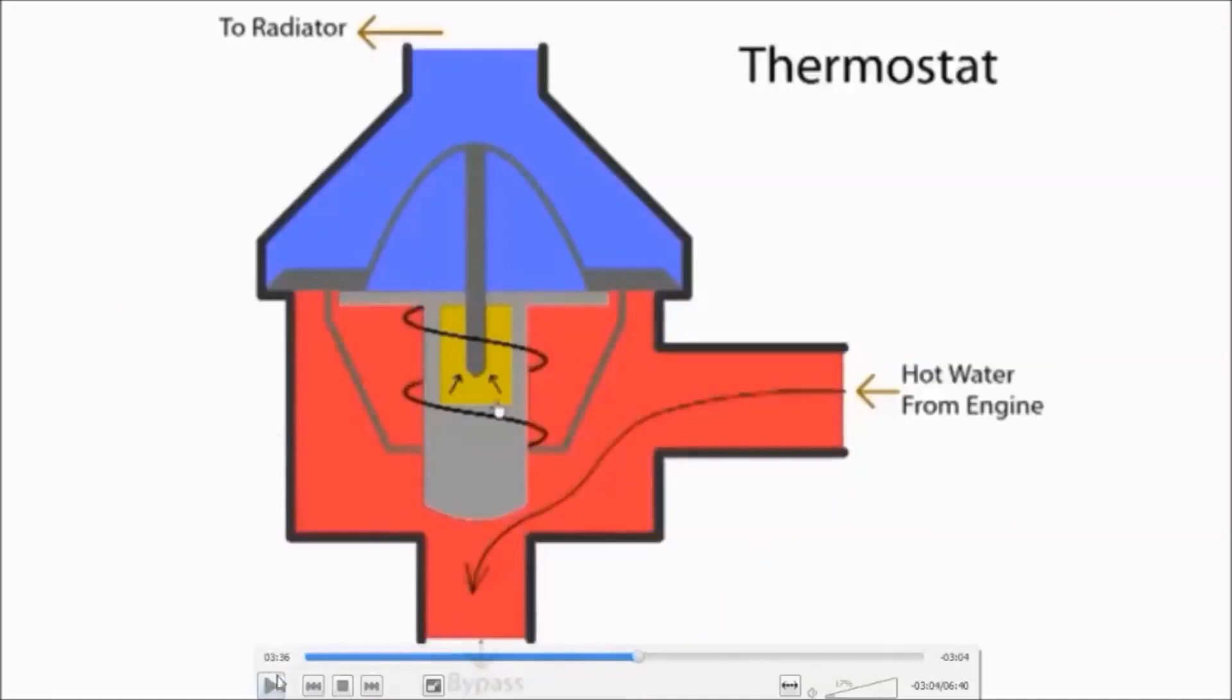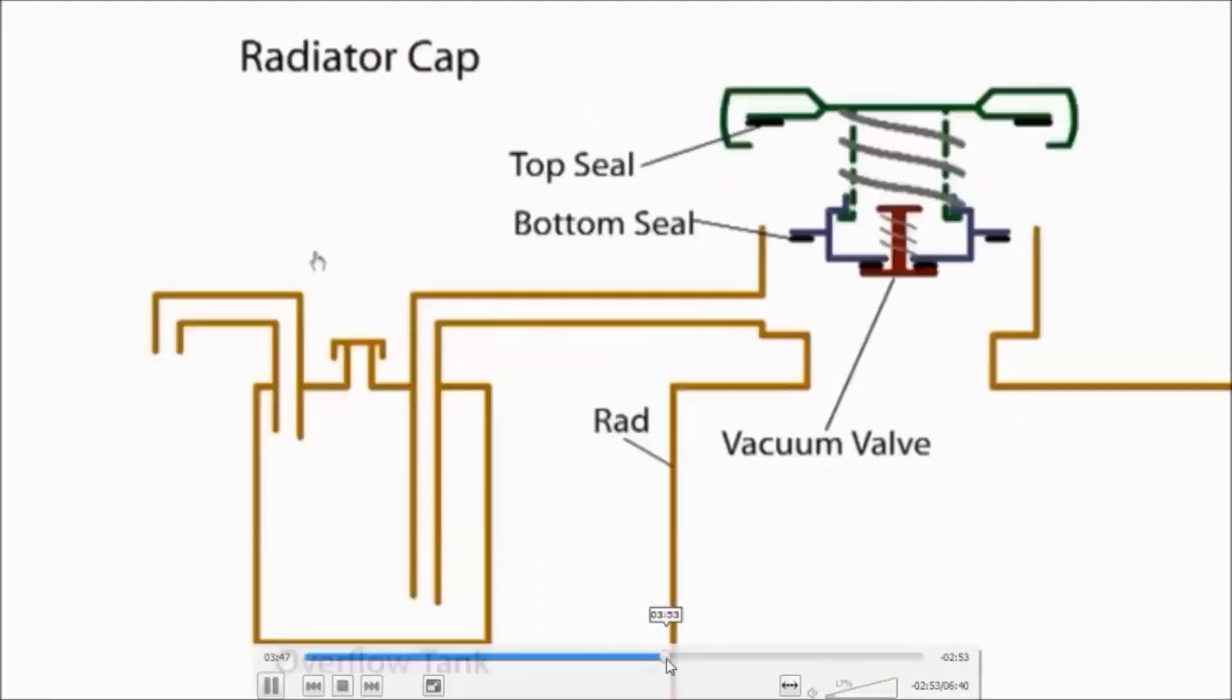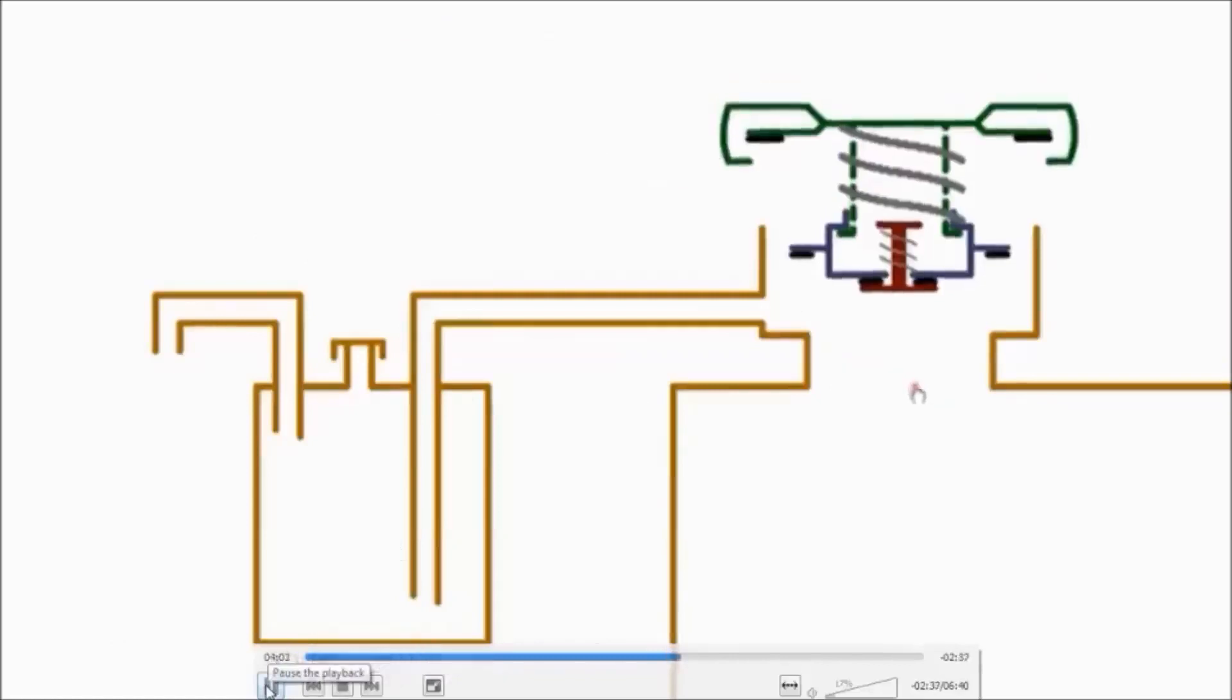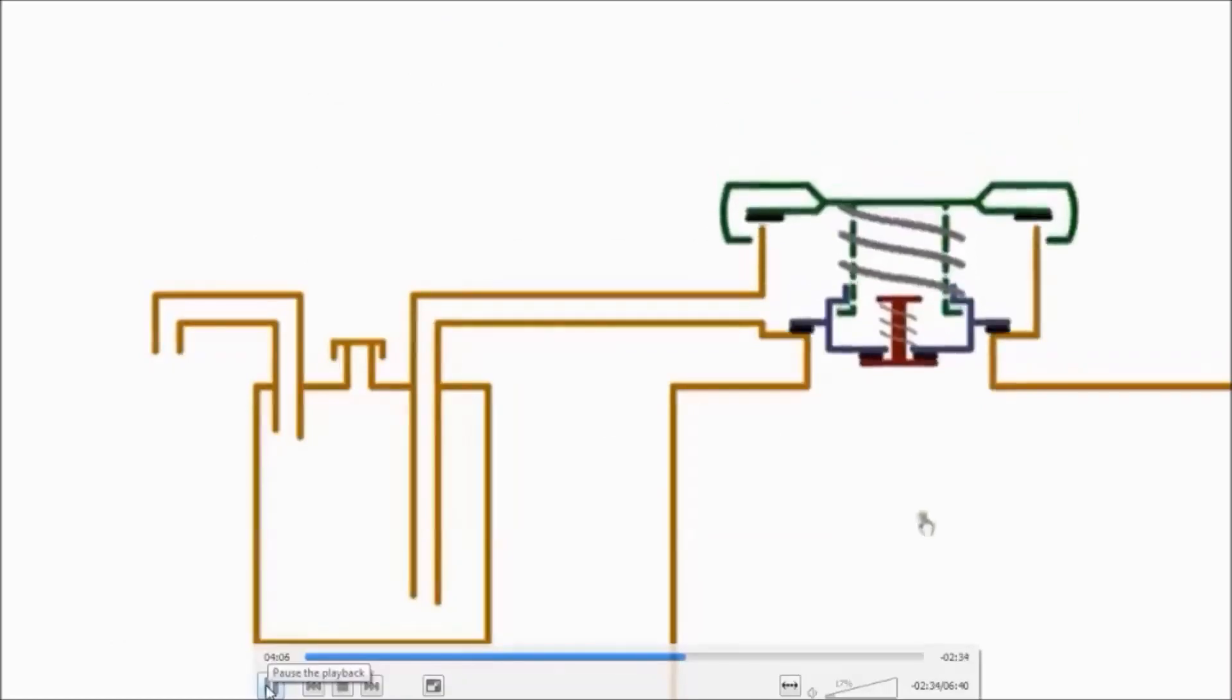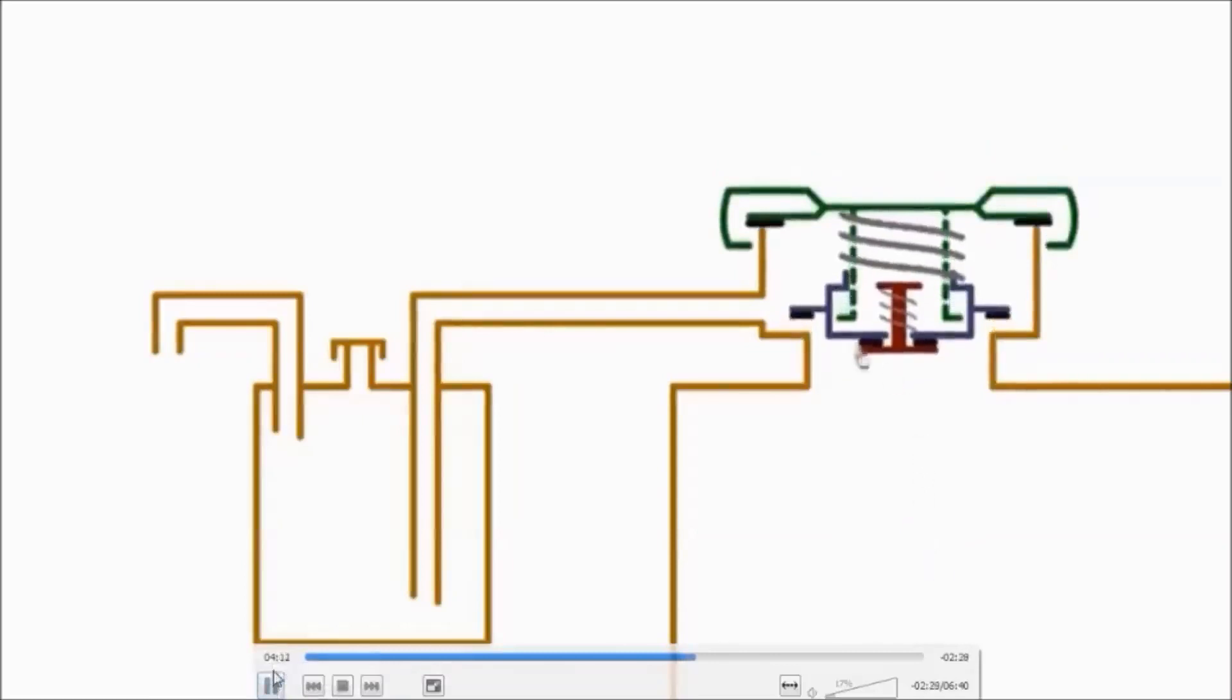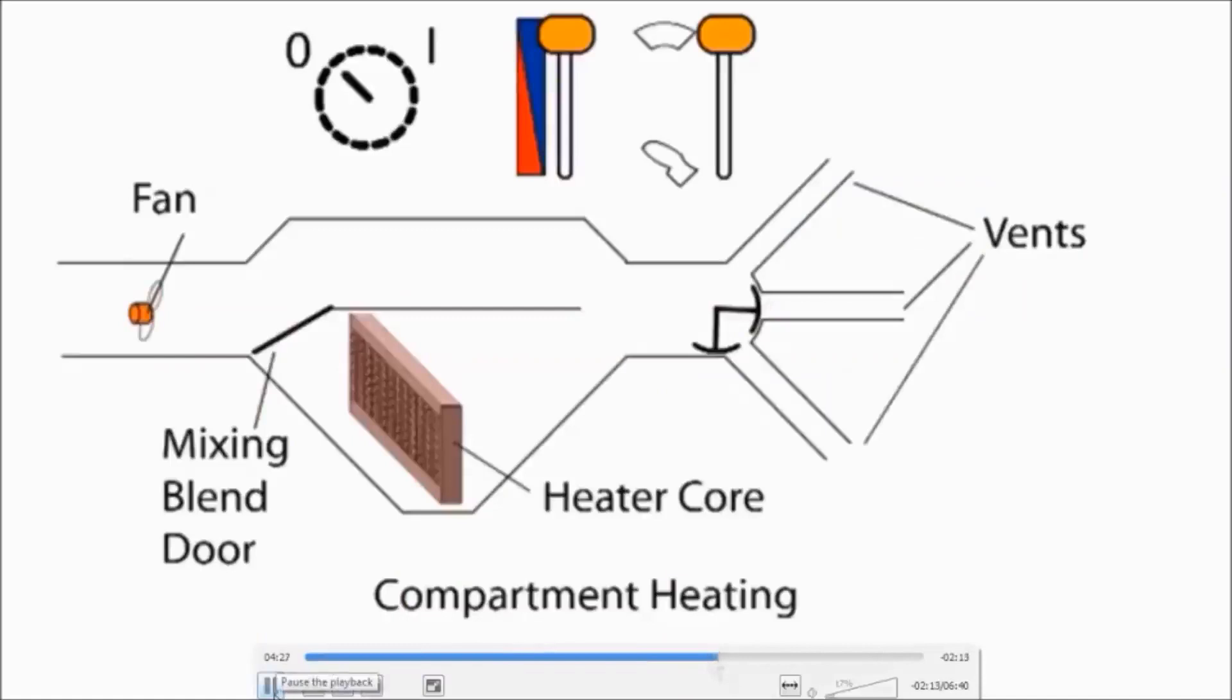The radiator pressure cap is used to pressurize the system to specific pressure which raises the boiling point of the coolant. It also acts as pressure relief wall preventing damage. As water heats up it expands and excess water is allowed to flow to the expansion tank. Later when the engine cools down, negative pressure in the cooling system sucks the water back through a vacuum valve in the cap.